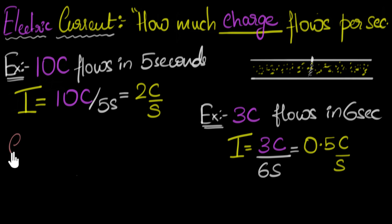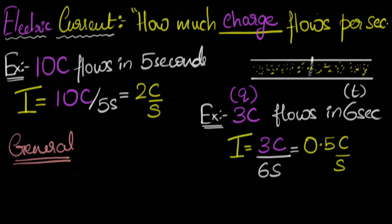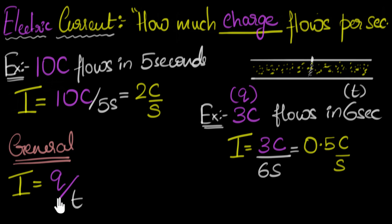Let's generalize this and come up with a general formula to calculate current. In general, if Q amount of charge flows in T amount of seconds, then the current in general is going to be the amount of charge Q divided by the time T. That's what we did in both cases — we divide the charge by time. And that's how you calculate the current in general. The unit for current is coulombs per second.